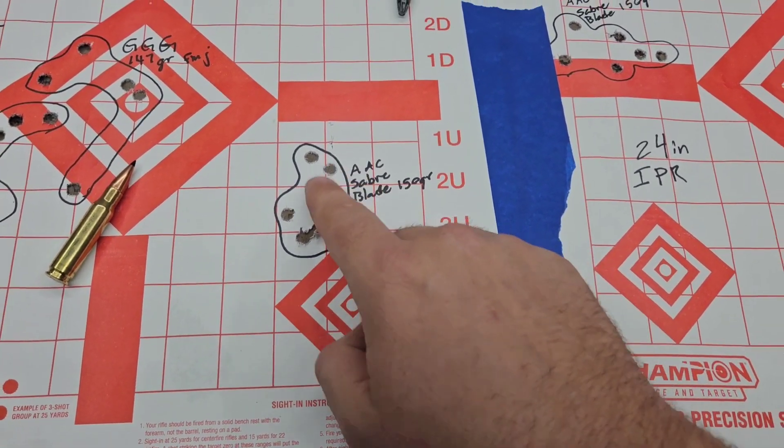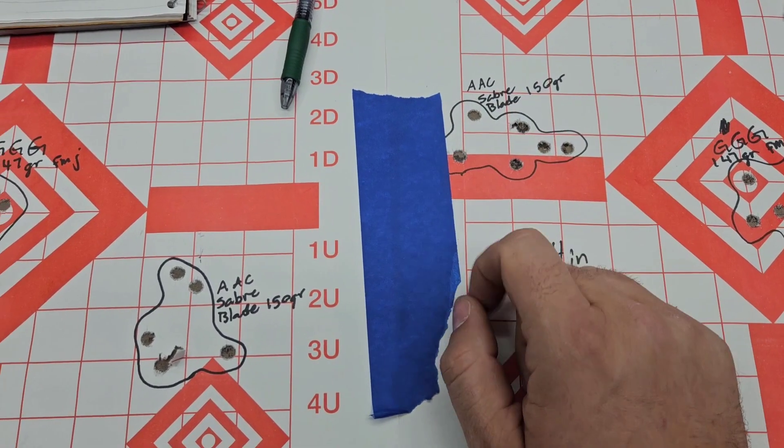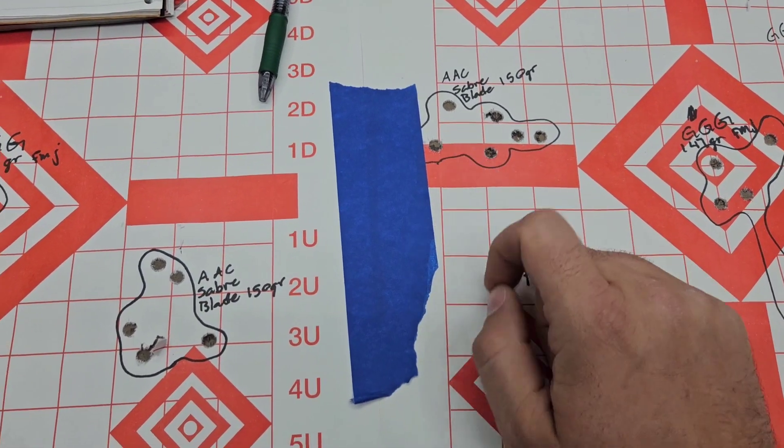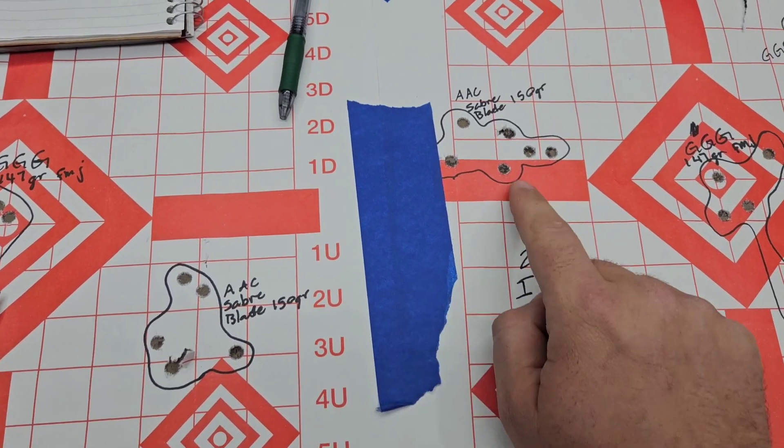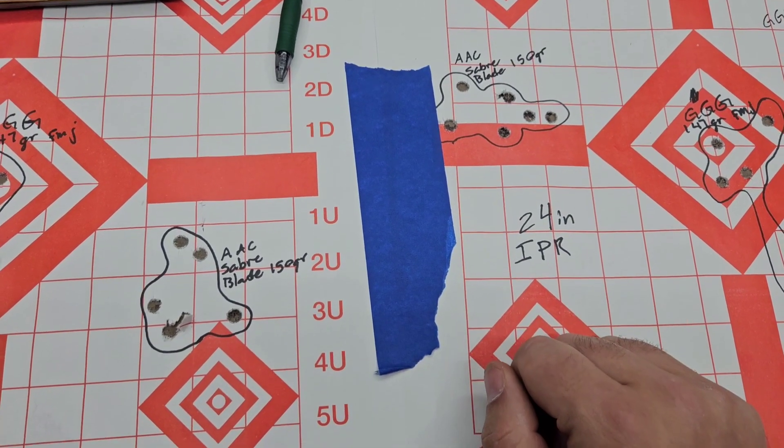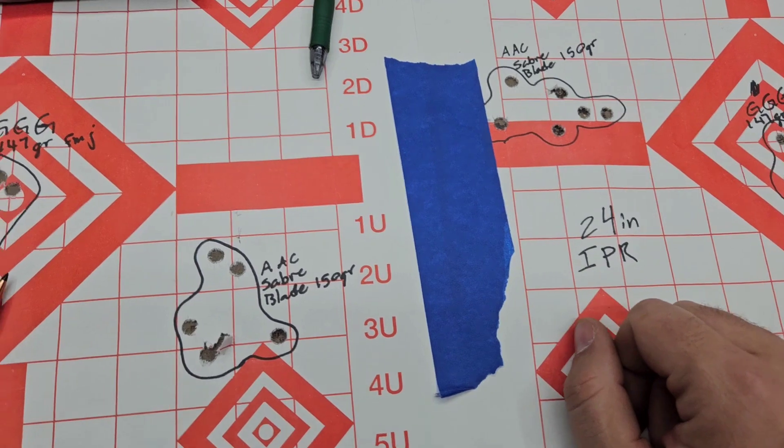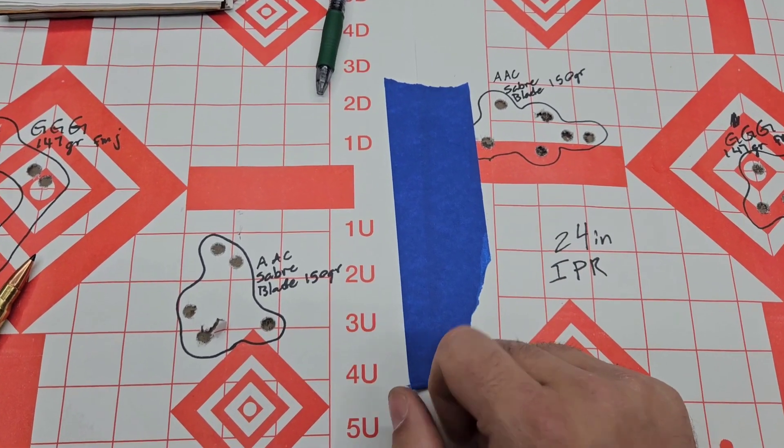And then for the AAC, not too bad. We're looking roughly about the same size, really. Other than the group shape is different, it's got some more vertical stringing and horizontal stringing. But really pretty repeatable between the two guns. Again, this is a brand new gun. This is an extremely worn gun. It's getting to the point where it might actually be kind of wore out. Might replace the barrel on that.